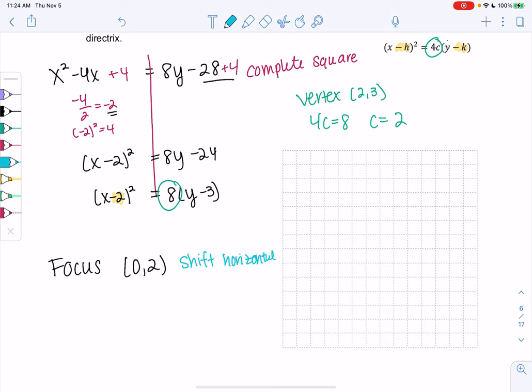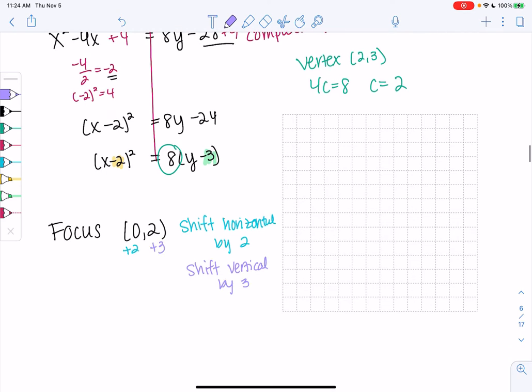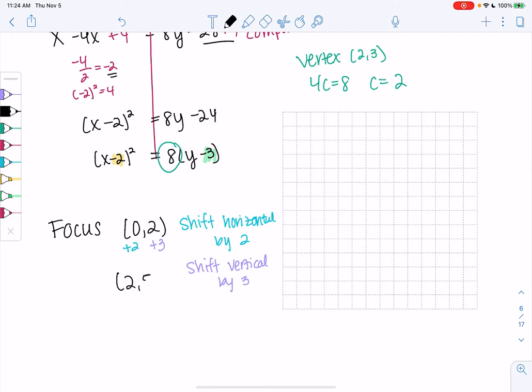The x shifts by 2. Shift horizontal by 2, so plus 2. Then shift the vertical by 3. It's opposite. If it's negative in the equation, it's positive shifts. So we shift vertical by 3, add 3. So our focus is now at (2,5). If you use the formulas, you get the same thing.